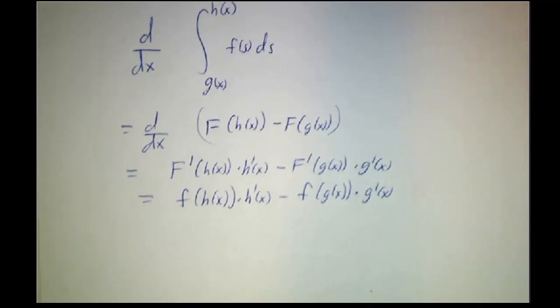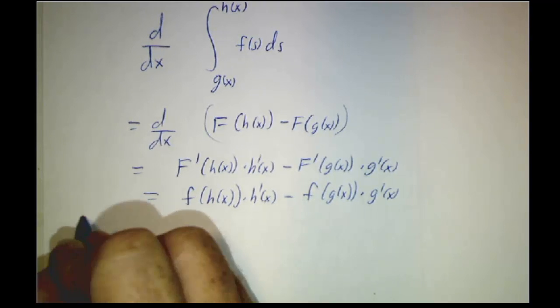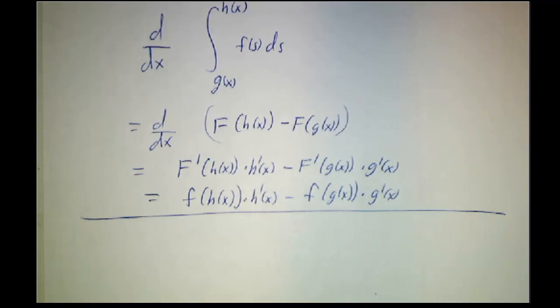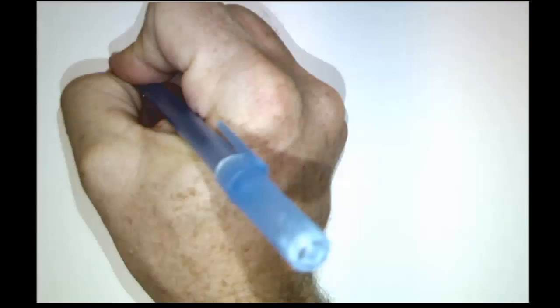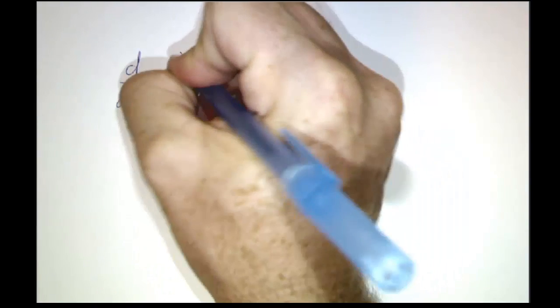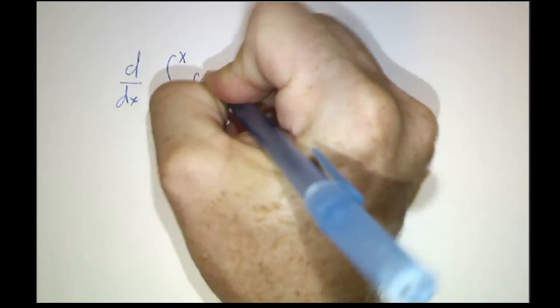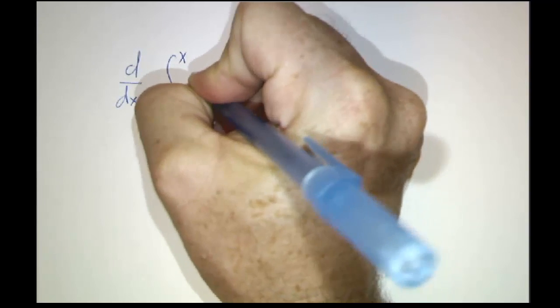In fact, this is a backdoor way of seeing why the first fundamental theorem is true. If you believe that every function has an antiderivative, and for that you really do need to go through the proof of the first fundamental theorem, but if you believe that antiderivatives exist, then the derivative of the integral from a to x of f of s ds,